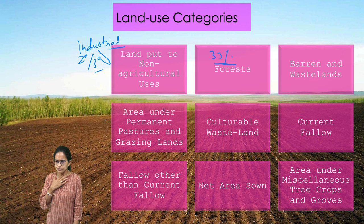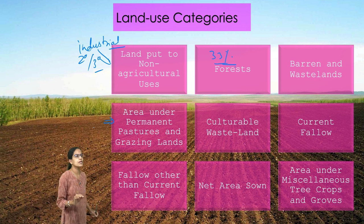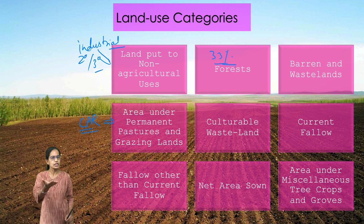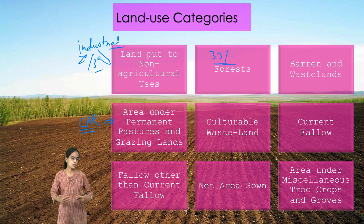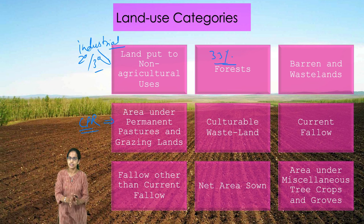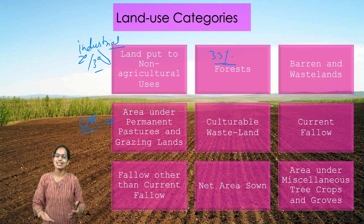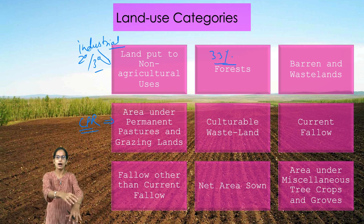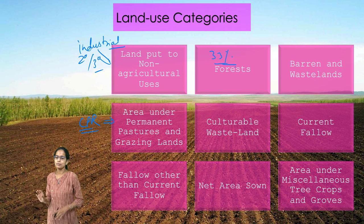The next category is area under permanent pastures and grazing land. These can either be owned by panchayats or be part of the CPR — Common Property Resources. In a village, canals and wells utilized by everyone are common property resources. Grazing areas where everyone's cattle can graze are known as common property areas.